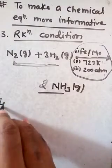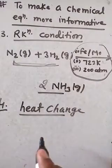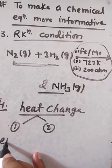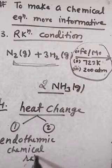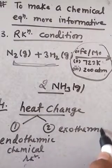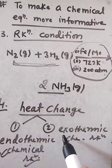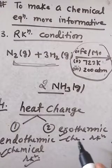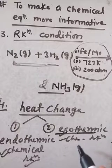The fourth point is heat changes. There are two types of chemical reactions according to heat change. First is endothermic — a reaction in which heat is required or absorbed. Second is exothermic — a reaction in which heat is produced or given out.